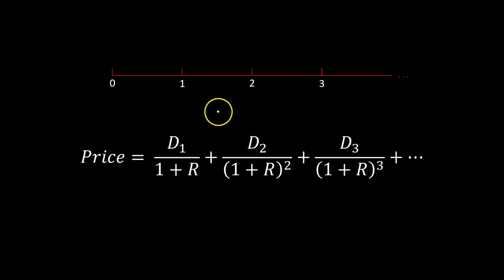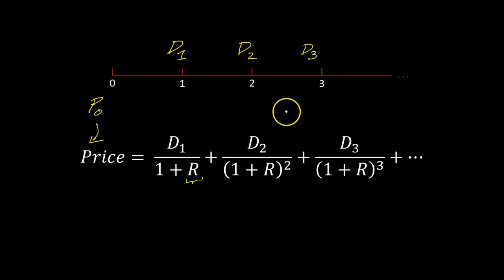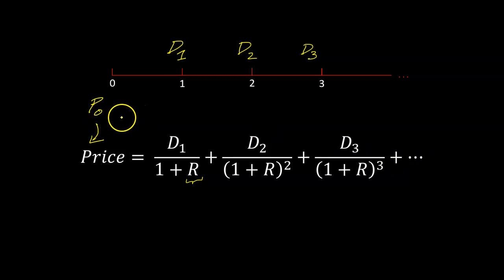To quickly refresh your memory: the dividend discount model of stock valuation says that the price of the stock today, P0, is the discounted value of all dividends you can expect from the stock in the future. With required rate of return R, you discount D1 back one year, D2 back two years, D3 back three years, and so on forever — because when you own a stock, you own ownership in an entity potentially going to last forever.